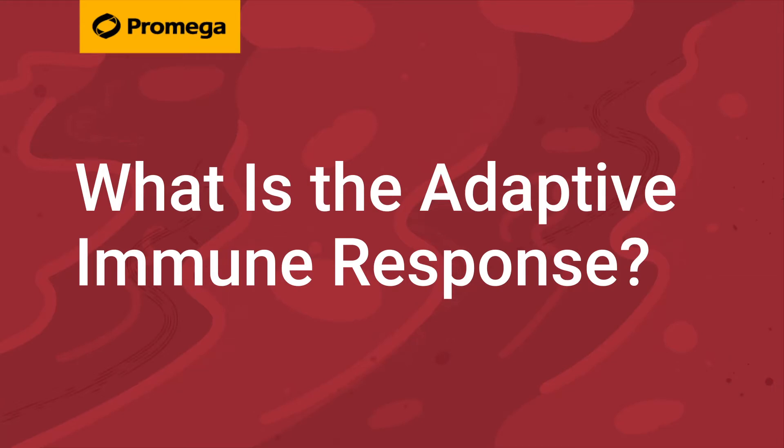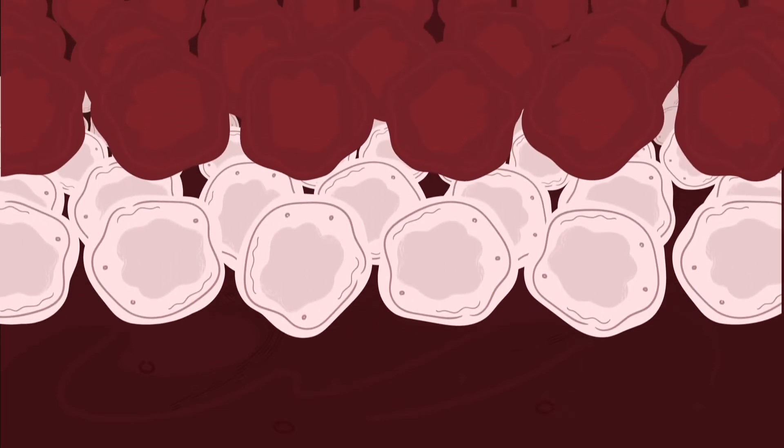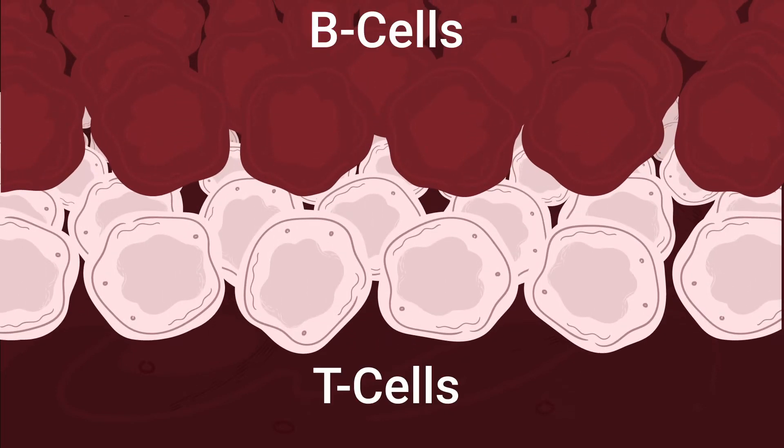What is the adaptive immune response? The adaptive immune response is largely based on the activities of two types of cells, T-cells and B-cells.